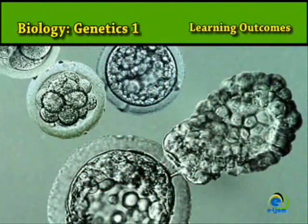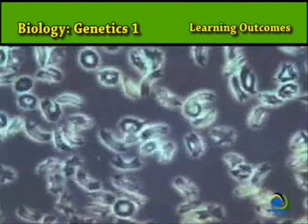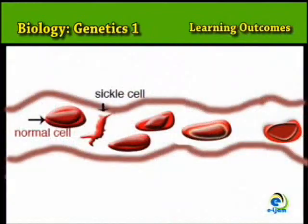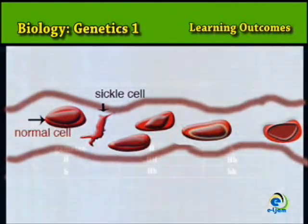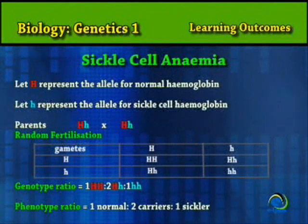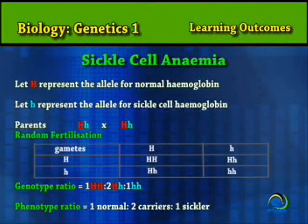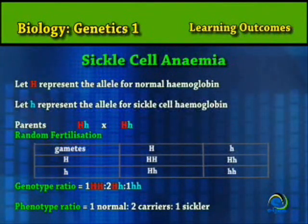When oxygen is scarce, these defective molecules become insoluble and combine with one another, forming stiff, rod-like structures. This results in the formation of sickle-shaped red blood cells. In this case, individuals who carry one allele for normal hemoglobin and one for sickle cell hemoglobin are carriers and are said to have the sickle cell trait.